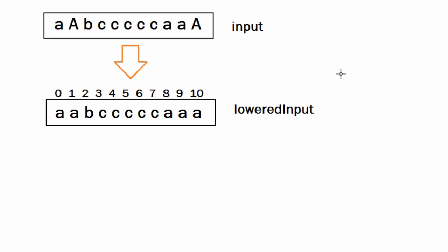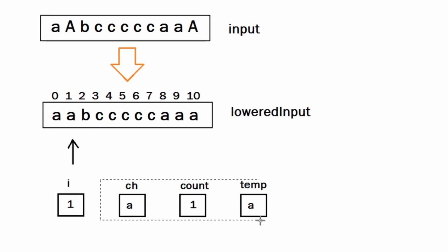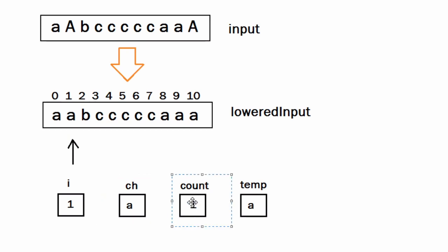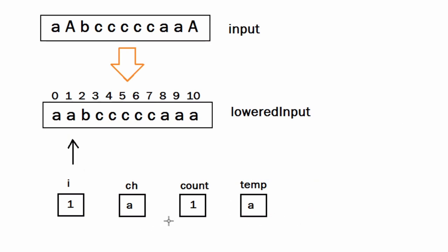Next, we will take a for loop and iterate over this string. Inside the loop we have a variable i, starting from 1. We have also taken three more variables: ch, which holds the 0th index character of the lowered input (which is A in this case), count which holds the number of times a character is present (initialized to 1), and temp which will store the character at the ith index. Since i is 1, temp will store A.